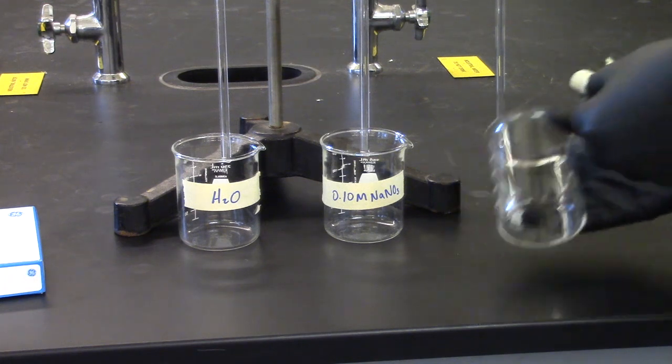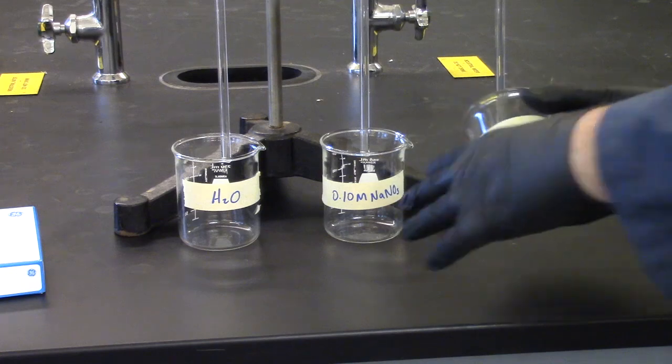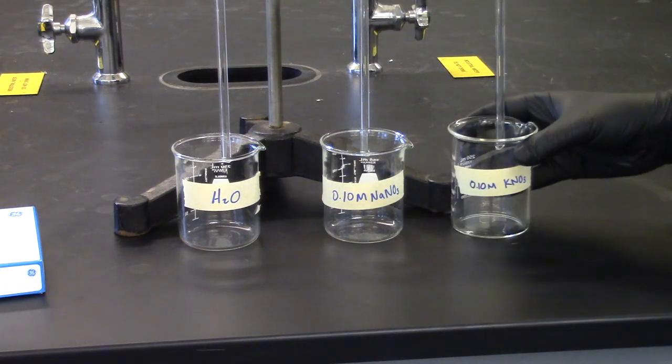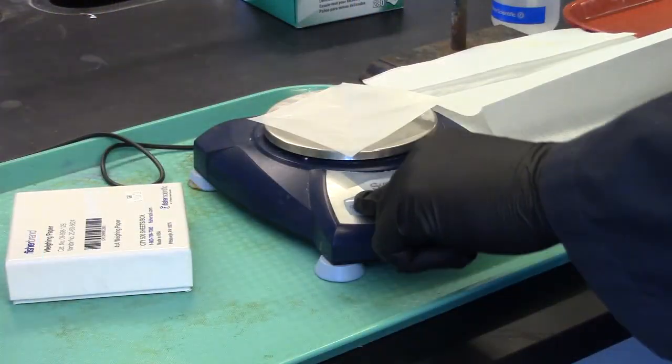Label beakers with the three different solvents: distilled water, 0.1 molar sodium nitrate, and 0.1 molar potassium nitrate to be used to make saturated solutions of potassium acid tartrate, abbreviated KHT, with common name cream of tartar.